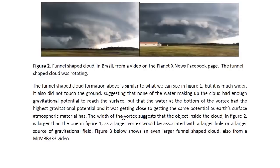The water at the bottom of the vortex had the highest gravitational potential and it was getting close to reaching the same potential as the Earth's surface atmospheric material has. The width of the vortex suggests that the object inside the cloud here is larger than the one in figure one, as a larger vortex would be associated with a larger hole or a larger source of gravitational field.